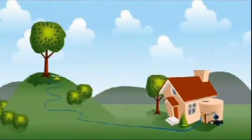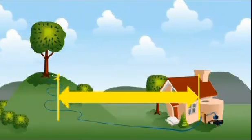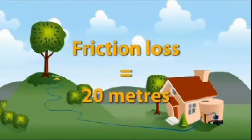In Aunty Flo's case, she only requires 50 metres of pipe. Therefore, we must halve the value. Half of 40 is 20. 20 metres is therefore our friction loss.